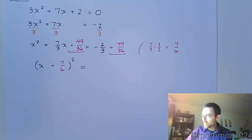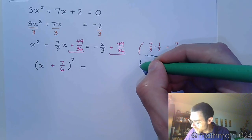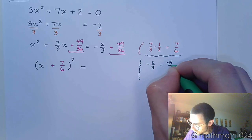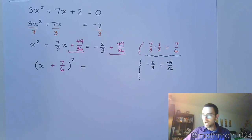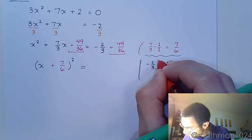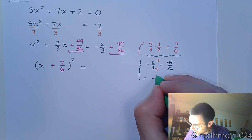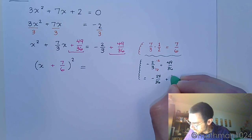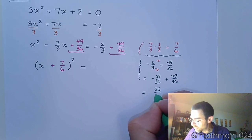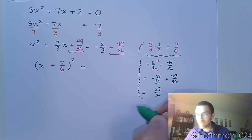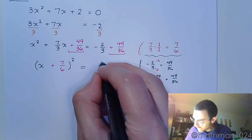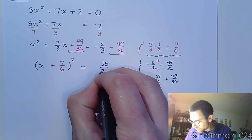We need to add these fractions, so let's do some scratch work. We need -2/3 + 49/36. The common denominator is 36, so we multiply -2/3 by 12/12 to get -24/36. Then -24/36 + 49/36 = 25/36. Not the best-looking number, but it's going to work out in our favor.